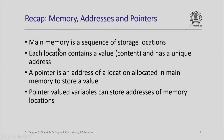We are going to talk about memory addresses and pointers a lot in this lecture, so let us quickly recap what these terms mean. Main memory is basically a sequence of storage locations. Each location in main memory contains a value which is exactly 1 byte or 8 bits — this is also called the content of that location. Each location in main memory also has a unique address. A pointer is basically an address of a location allocated in main memory to store a value, and pointer-valued variables store such addresses of memory locations.